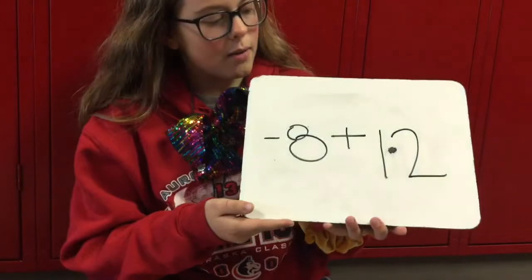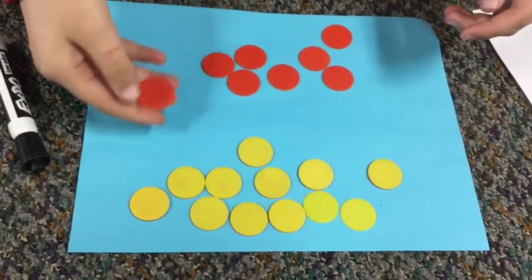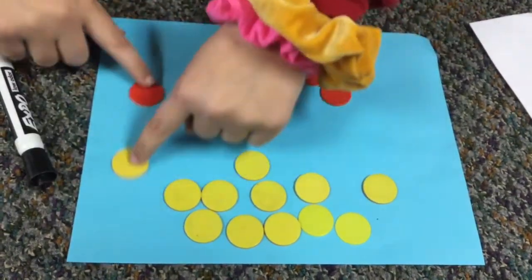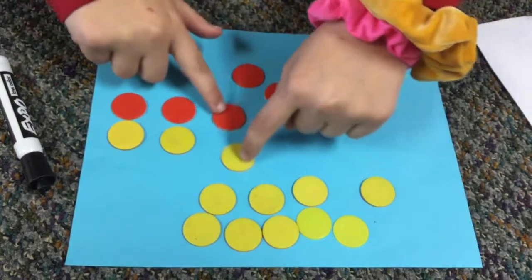So our first problem is negative 8 plus 12. And first we need to understand that a red chip means negative and a yellow chip means positive. So for this problem we'll be putting these in groups of 0.